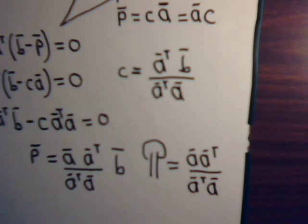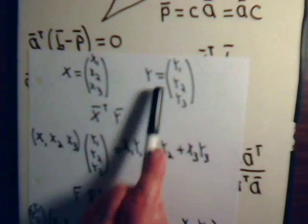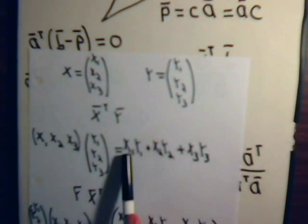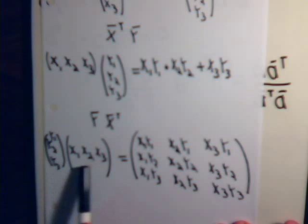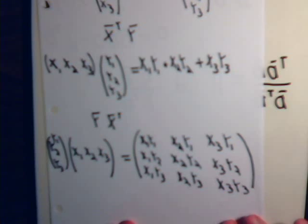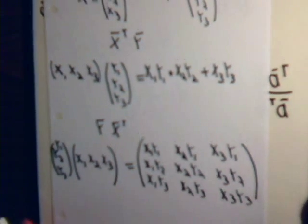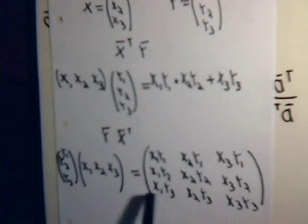Remember how this works: say we have two vectors x and y. If we take their inner product, we take the transpose of x times y — written as a row times a column — then multiply across and add. But if instead we have a column vector times a row vector, that gives a matrix, because you get x1 times that column plus x2 times that column, and so on. So a row vector times a column vector is just a dot product, but if we switch the order — column times row — we get a matrix.